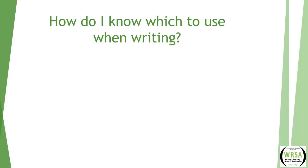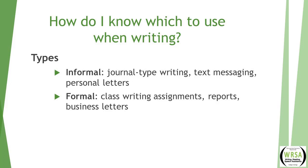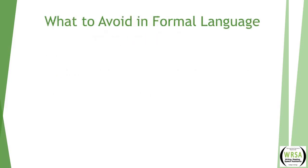How do I know which type of language to use when I'm writing? If it's an informal situation, it would include journal-type writing, text messaging, and personal letters. An example of formal writing would be a class assignment, a report, or a business letter. When you're using formal language, there are certain things to avoid, and we're going to go over those examples.